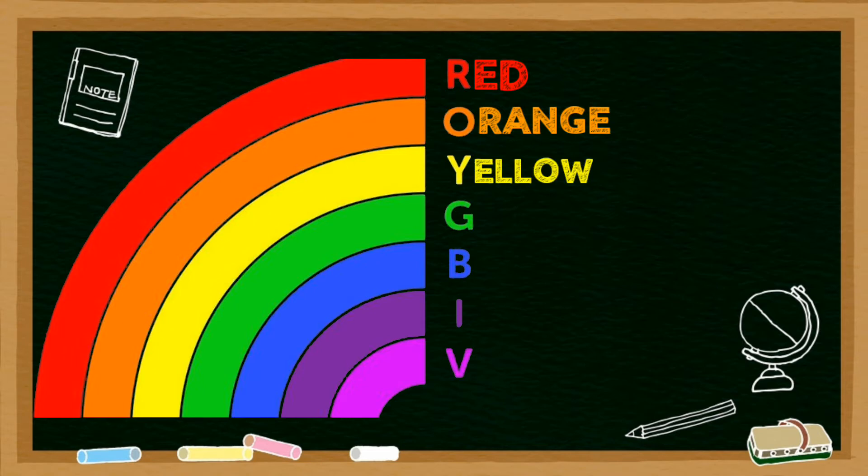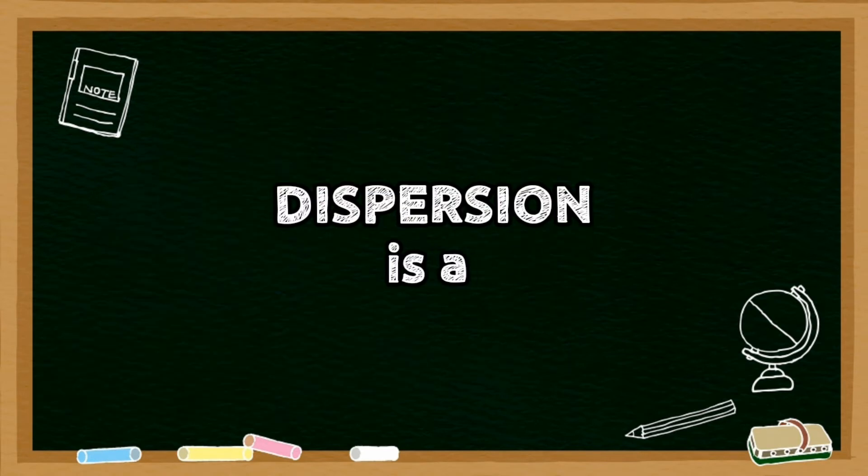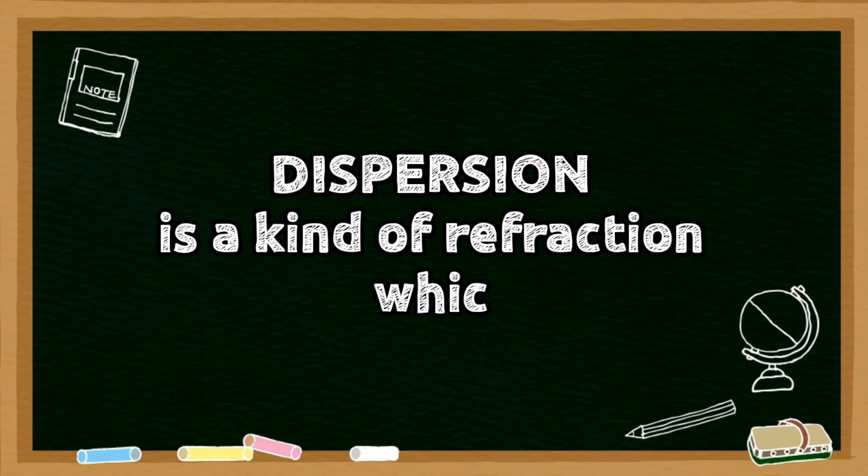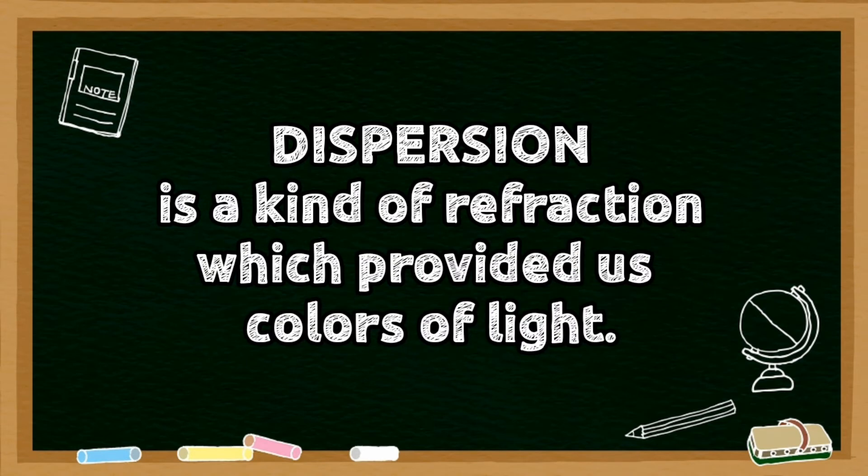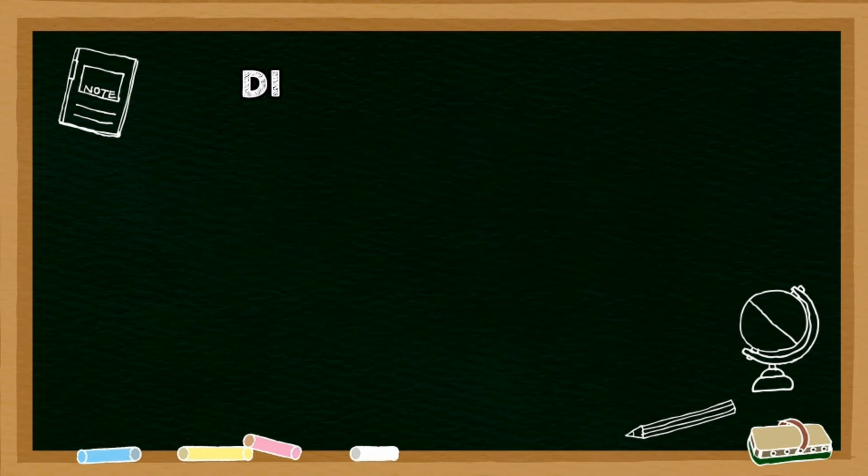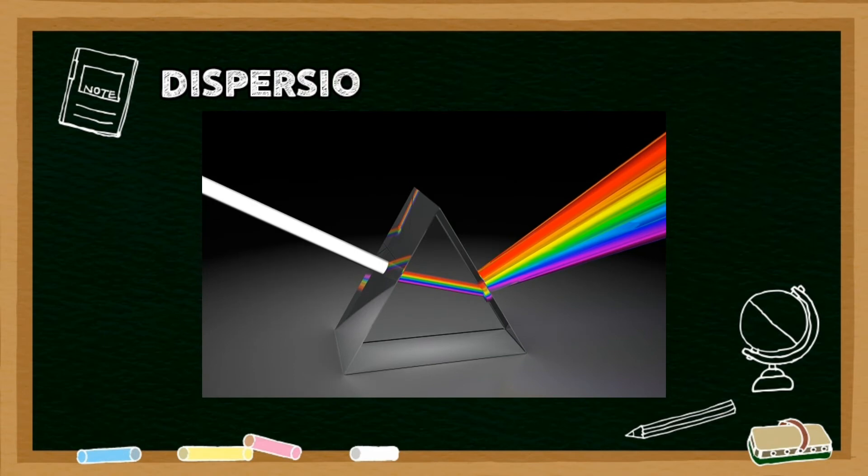Dispersion is a kind of refraction which provides the colors of light. Dispersion can be observed when white light passes through a prism.